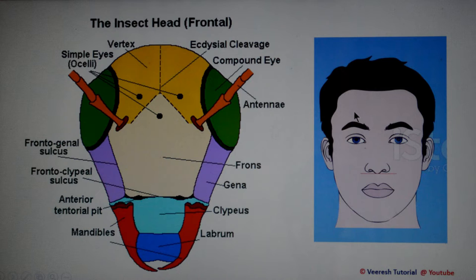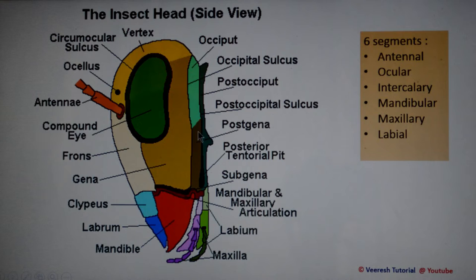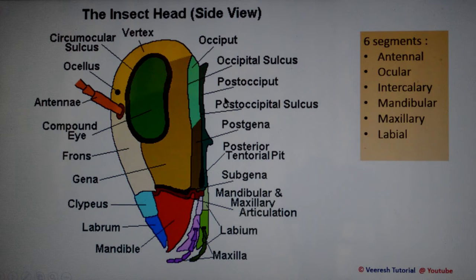Looking at the head from the lateral view, the area present above or behind the mandibular articulation is called the subgena. The subgenal part above the mandibular articulation is called the pleurostoma; if it is behind the mandibular articulation, it is called the hypostoma. The area posterior to the occipital sulcus is called the postgenal. The occipital suture lies behind the compound eyes and in front of the occiput, whereas the postoccipital suture — according to Snodgrass — is the only true suture present in the insect head, lying behind the occiput.